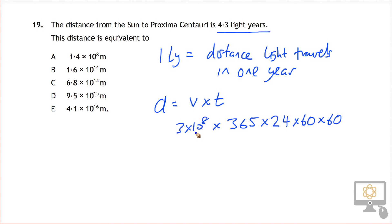So that's the number of meters effectively that one light year is equivalent to. But we've not got one, we've got 4.3. And so the distance is equal to that times 4.3.